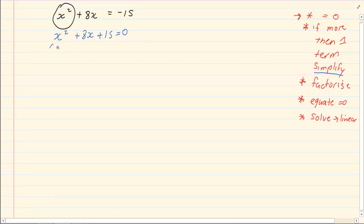So now we start factorizing, which gives us x plus 5, x plus 3 is equal to 0.